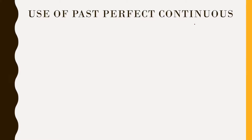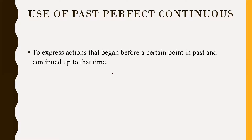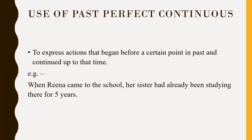Use of past perfect continuous. First, to express actions that began before a certain point in the past and continued up to that time. Example: 'When Rina came to the school, her sister had already been studying there for 5 years.'